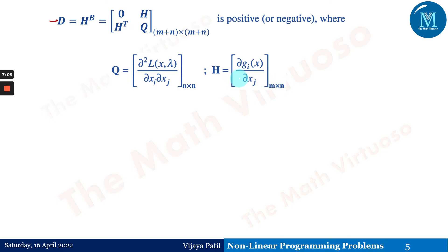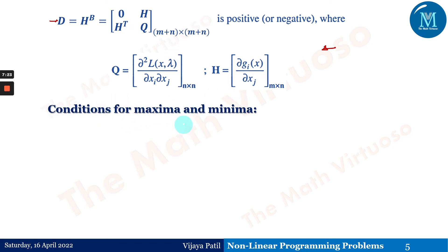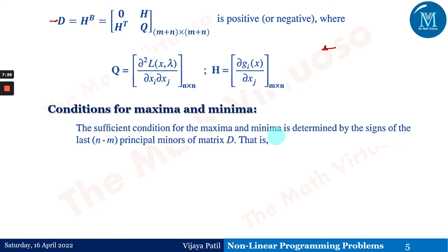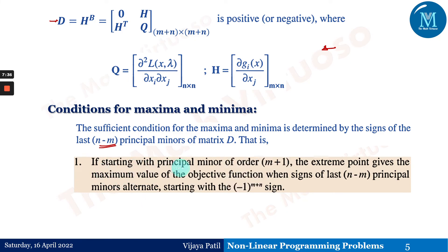This notation will become clear when we work through examples in upcoming videos. The sufficient condition for maxima and minima is determined by the signs of the last n − m principal minors of the capital D. Starting with the principal minor of order m+1, the extreme point gives the maximum value of the objective function when the signs of the last n − m principal minors alternate, starting with (−1)^(m+1).